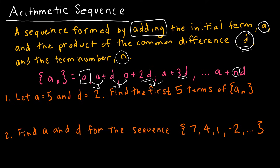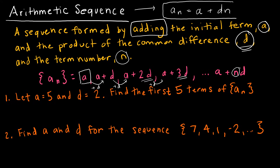An arithmetic sequence can be described using just the initial term and common difference, or we can write it explicitly. Writing it explicitly means I can write an equation where all I have to do is plug in n to find whatever term I want. So a sub n in this case would be a plus d·n. This is how you write an arithmetic sequence explicitly — remember this, because when we talk about recurrence relations we'll see why writing things explicitly is so important.